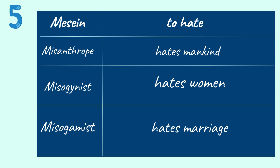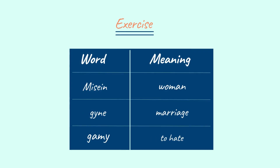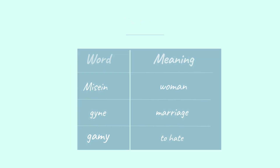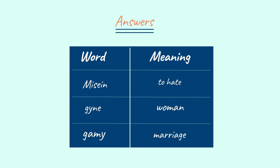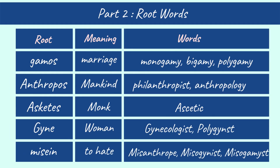I hope you are clear on all 5 root words and the related words around them. Now let me give you an exercise. Pause the video, solve the exercise, and message the answer in the comment. I will share the answer in a while. The answers are on your screen: Misan means to hate; Gyne means woman; Gami means marriage. Let's quickly revise the 5 root words: Gamos — marriage; Anthropos — mankind; Ascetis — monk; Gyne — woman; Misan — to hate.